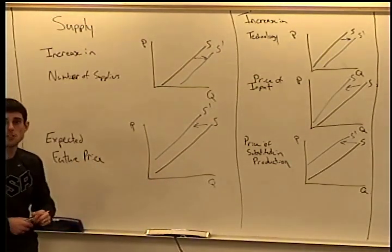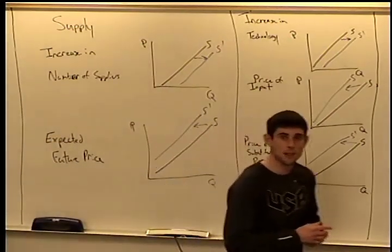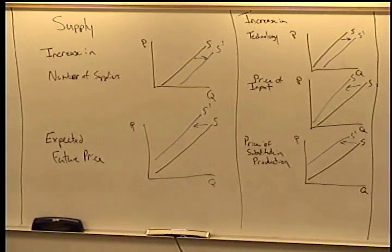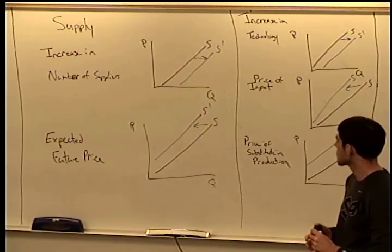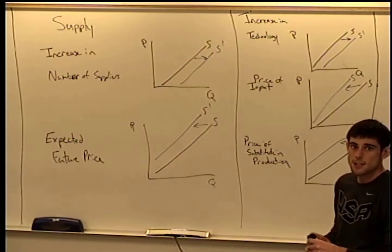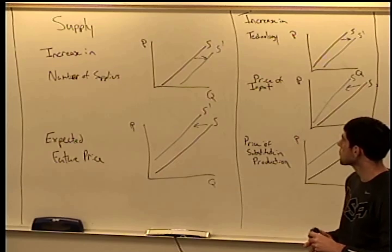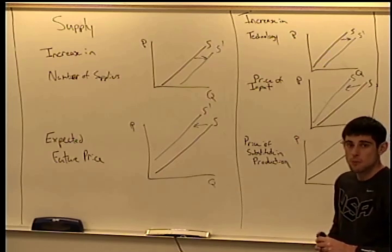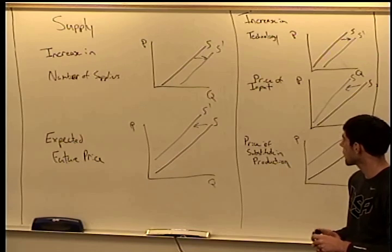These five factors summarize everything we need to know about supply. That covers the supply side of the market. Next, we want to analyze what happens if we put buyers and sellers in the same room and let them start trading — how they would negotiate trade.